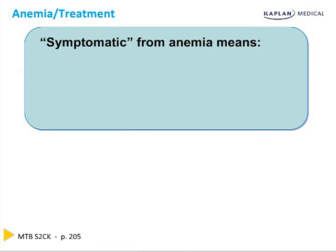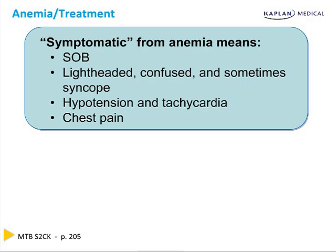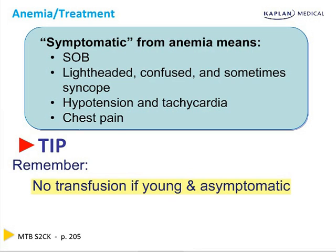You transfuse patients when they're symptomatic from anemia. Symptomatic means short of breath, lightheaded, confused, syncope, low blood pressure, tachycardia, or chest pain. All symptomatic patients have to be transfused. No transfusion if the person's young and asymptomatic — they will make their own reticulocytes. Give them time; there's no rush. They're asymptomatic and they'll get their own reticulocytes in a couple of days.